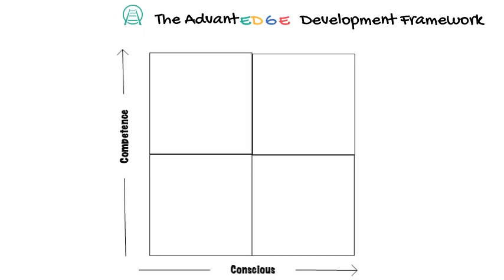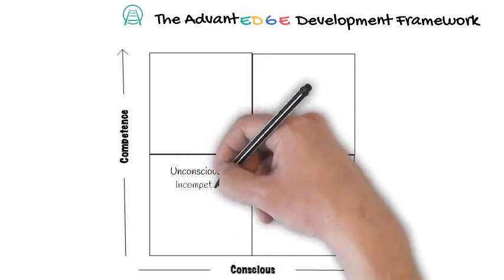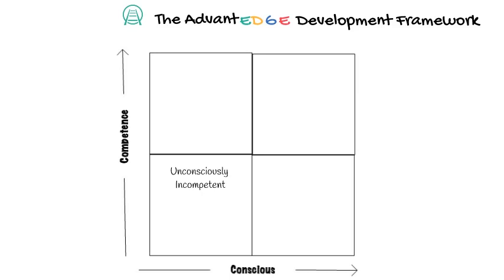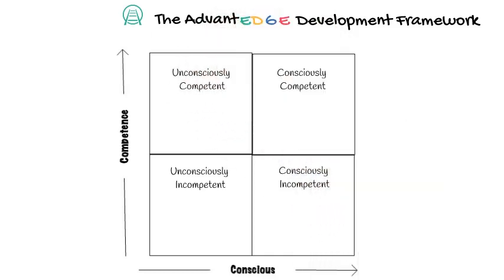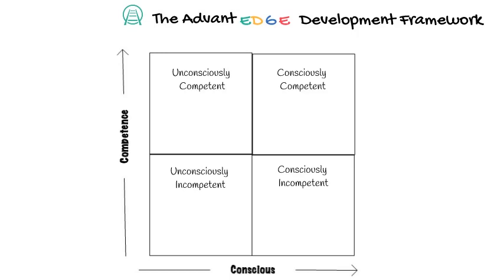Essentially, it's about how well we know how we do something. At the beginning of developing any competence or skill, we begin as unconsciously incompetent — we don't know that we don't know how to do something; we may be blissfully ignorant. As we become aware that we need to develop a skill, we become consciously incompetent. As we develop that skill further, we become consciously competent. And as we practice and gain mastery, we eventually become unconsciously competent — we just do it with great skill or talent.